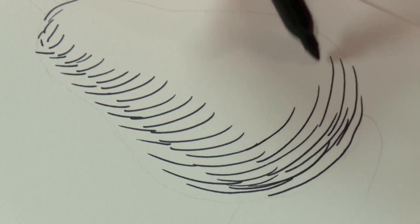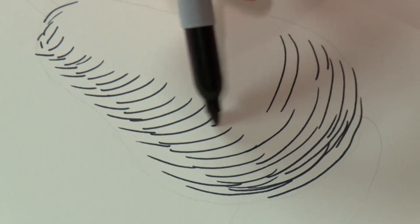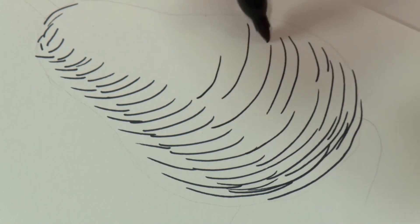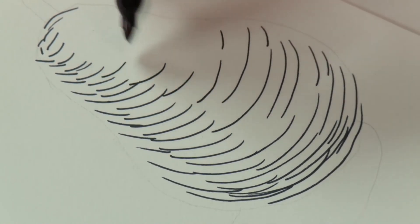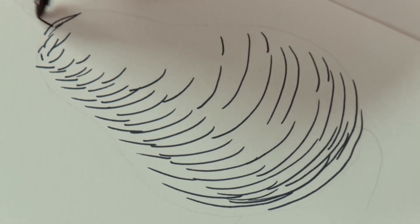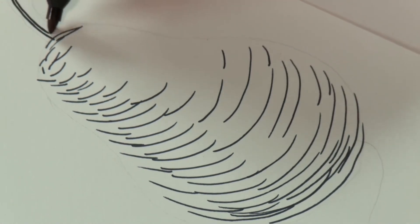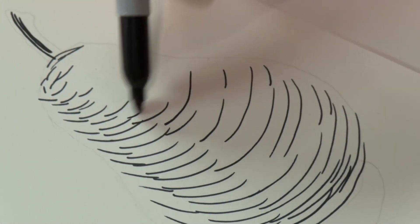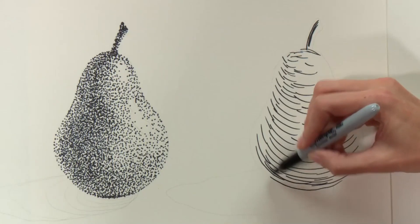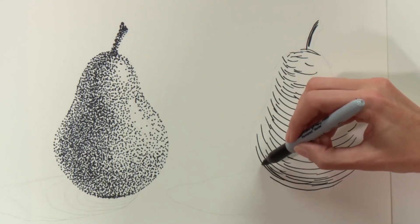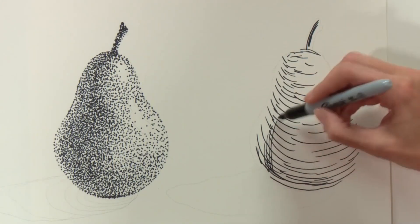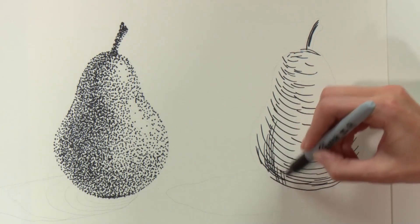So with my rounded lines, I'm going to go ahead and just block it out. In the darkest area, this was definitely going to be some cross hatching, so I will bring my lines a little closer together and cross them over.